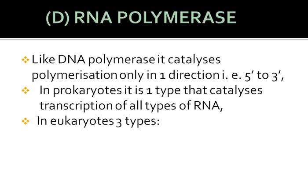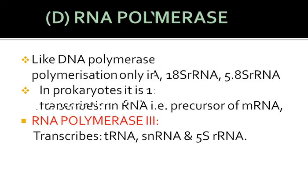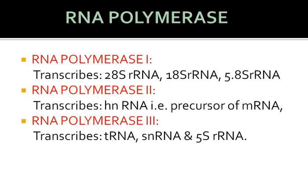In prokaryotes, the single RNA polymerase transcribes messenger RNA, transfer RNA, and ribosomal RNA. Whereas in eukaryotes, there are three types of RNA polymerase in the nucleus. RNA polymerase I transcribes 28S ribosomal RNA, 18S ribosomal RNA, and 5.8S ribosomal RNA.